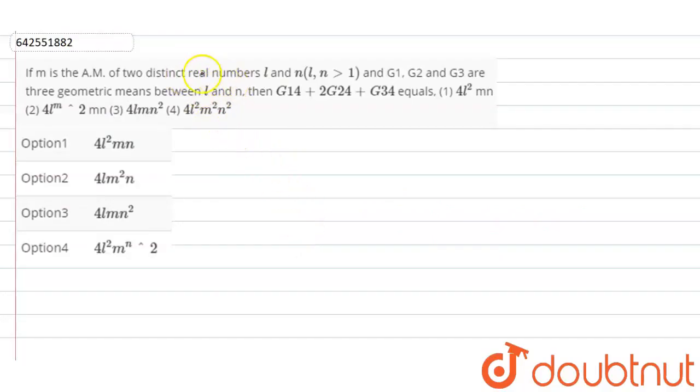If m is the arithmetic mean of two distinct real numbers l and n, that is l and n is greater than 1, and g1, g2 and g3 are the three geometric means between l and n, then g1 to the power 4 plus 2 g2 to the power 4 plus g3 to the power 4 equals.